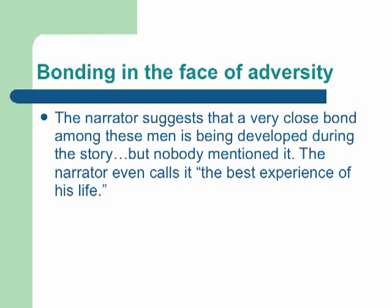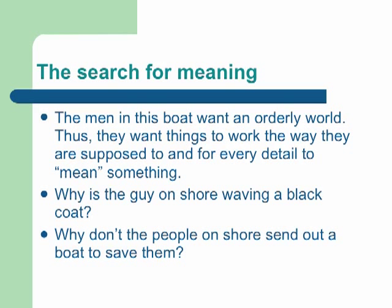The narrator suggests that a very close bond among these men is being developed during this story, but nobody mentions it. The correspondent even calls it the best experience of his life. The men in this boat want an orderly world — they want things to work the way they are supposed to, and for every detail to mean something. Yet within the story, we see elements that don't have clear meaning: Why is the guy on the shore waving a black coat? Why don't the people on shore send out a boat to save them? We never receive answers to these details — their meaning remains unclear.